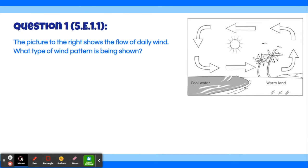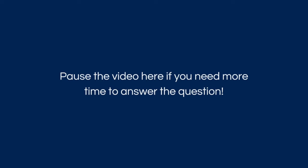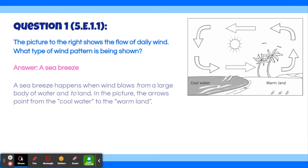The picture to the right shows the flow of daily wind. What type of wind pattern is being shown? The answer is a sea breeze. A sea breeze happens when wind blows from a large body of water to land. In the picture, the arrows point from the cool water to the warm land.